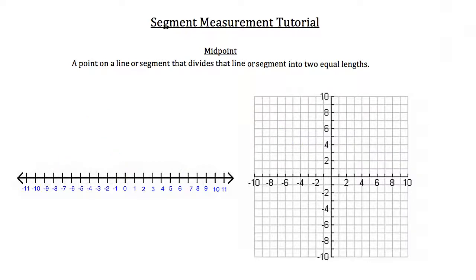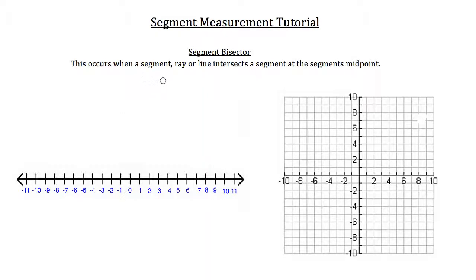Our next topic is the segment bisector. A segment bisector occurs when a segment, ray, or line intersects a segment at the segment's midpoint. On our graph on the right, we have two points: the first at negative 6, negative 4 and the second at 5, negative 4, which we'll label point D and point E. I'll draw a segment joining points D and E.